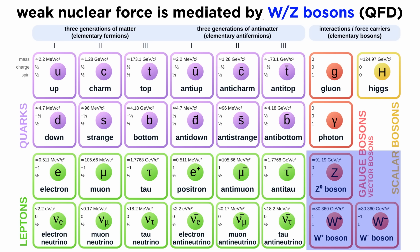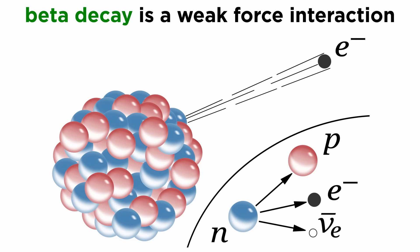The weak force, which is modeled by quantum flavor dynamics, or QFD, or sometimes together with electromagnetism as electroweak theory, is mediated by the W and Z bosons. As mentioned previously, the prediction and observation of these bosons was a huge victory for the field of particle physics. One of the best examples of a weak force interaction is beta decay.